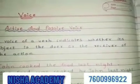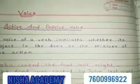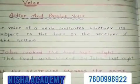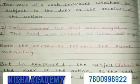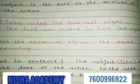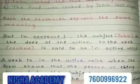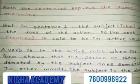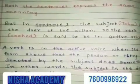Let us take two examples. First: 'John cooked the food last night,' and the second: 'The food was cooked by John last night.' Both sentences express the same meaning. But in sentence 1, the subject John is the doer of the action, so the verb 'cooked' is said to be in active voice. A verb is in the active voice when its form shows the person or thing denoted by the subject does something — in other words, the subject is the doer of the action.